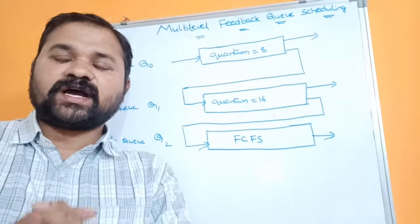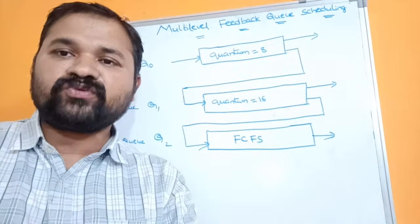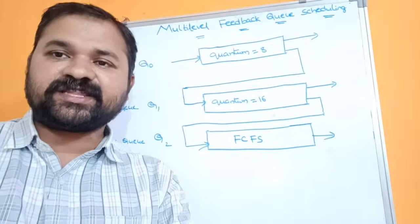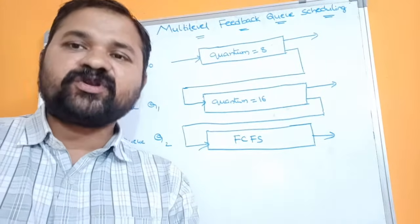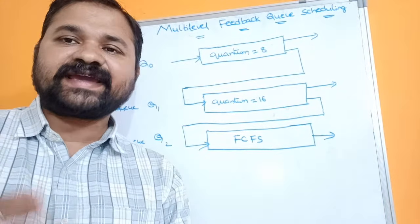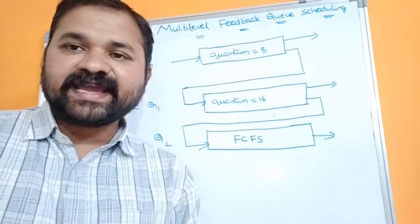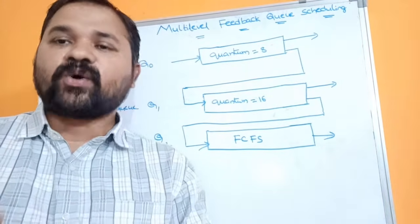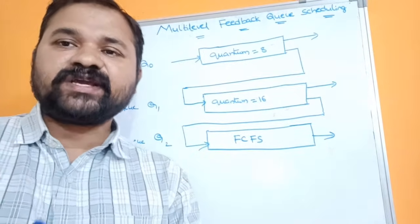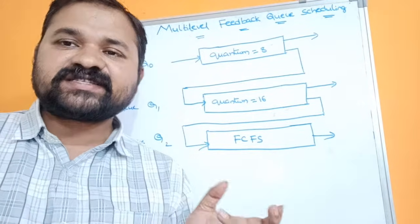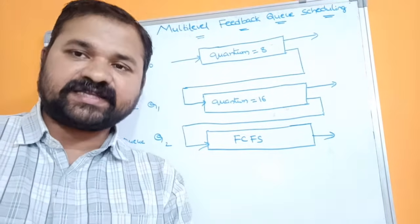Now let's see the multi-level feedback queue scheduling algorithm. We have several scheduling algorithms like FCFS, SJF, Round Robin, and Priority Scheduling. Likewise there are several scheduling algorithms available.